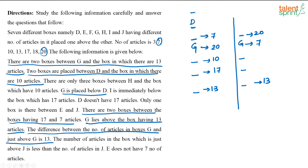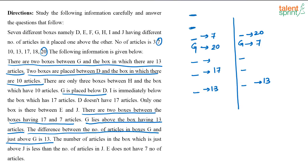Testing different placements for D above G: placing D at the position immediately above G fails because 10 cannot be placed with exactly two boxes between D and 10. The only valid case is where D is two positions above G, with one box between them, so that the box two positions above D can hold 10 articles. This gives us a consistent placement for D and the 10-article box.